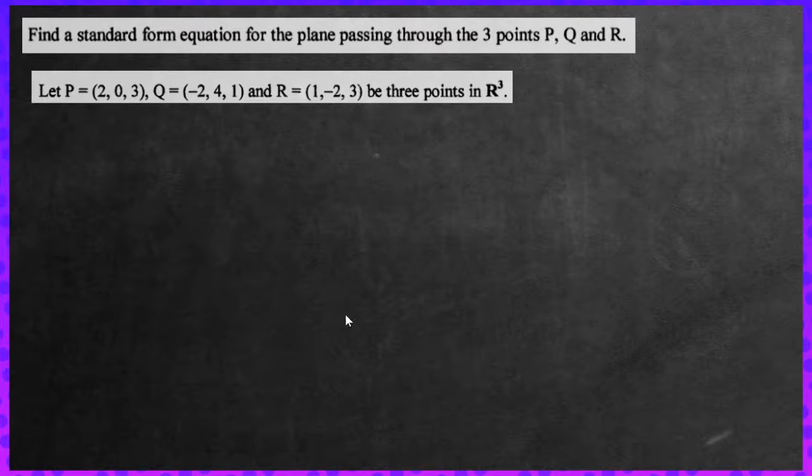Hi there, in this video we're going to be solving the following problem. Find a standard form equation for the plane passing through the three points P, Q, and R. So we have P, Q, and R right here. There are three points in R3, and we're asked to find an equation for the plane.